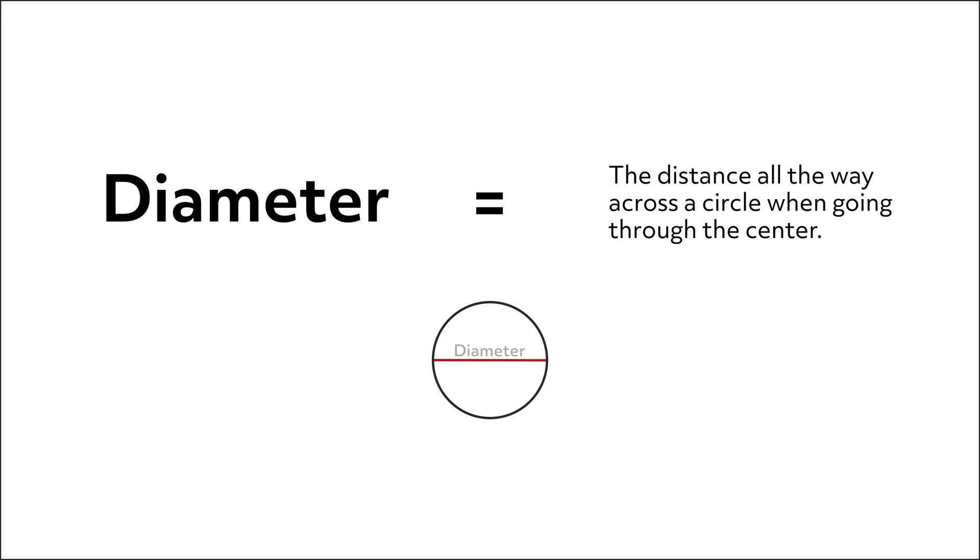Next up is the diameter, which doesn't appear in either of our formulas, but it's a very important part of a circle, especially for real-world problems. The diameter is the distance all the way across a circle when going through the center. It's always exactly twice as long as the radius.